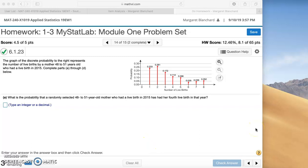Module 1, problem number 14. The graph of the discrete probability to the right represents the number of live births by a mother 48 to 51 years old who had a live birth in 2015. Complete parts A through D below. Before we get into part A, let's take a quick look at this.